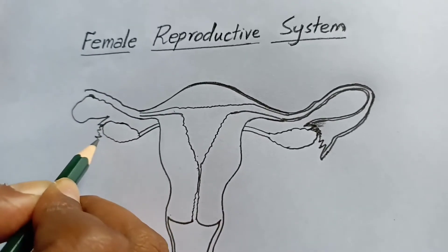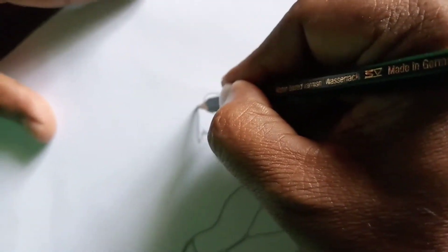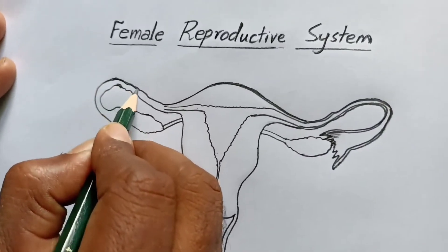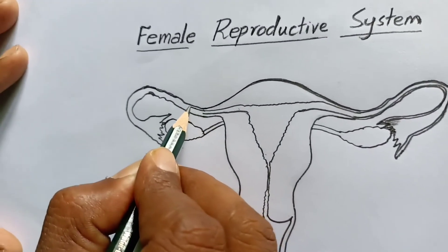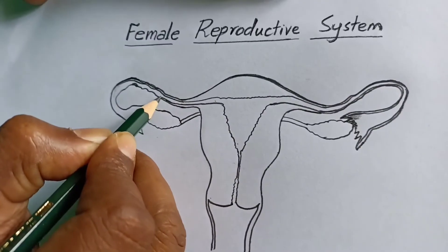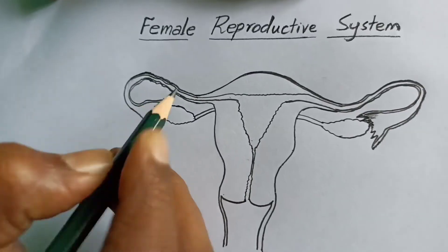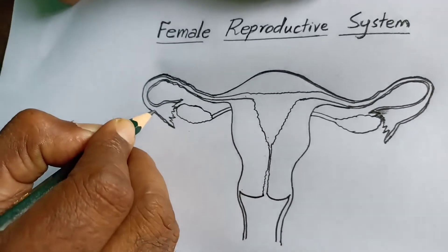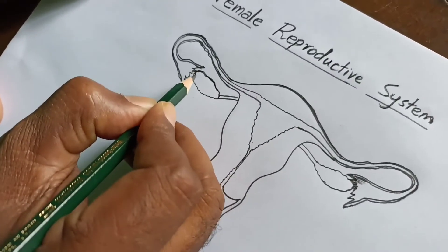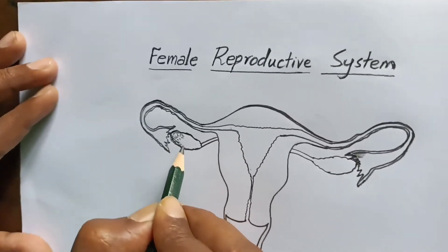It is also open at the ovary in a funnel shape. These fallopian tubes collect the eggs from the ovaries. These fallopian tubes are also known as oviducts. These are the ovaries. I'm giving some shades.